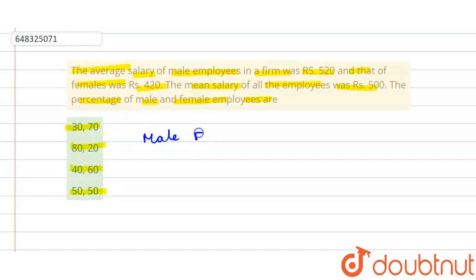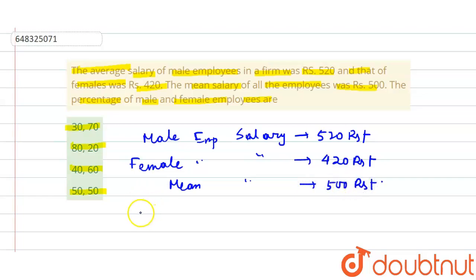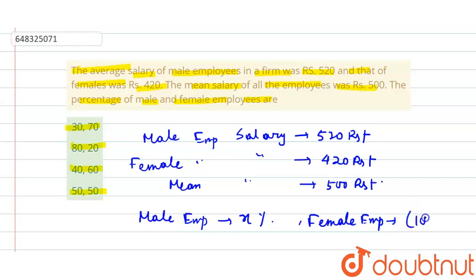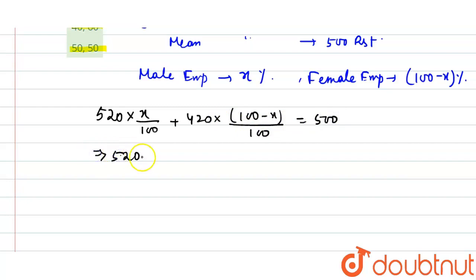Given that male employee salary equals 520 rupees, female employee salary equals 420 rupees, and mean salary equals 500 rupees. Let male employees equal x percent and female employees equal 100 minus x percent. So we get: 520 into x by 100, plus 420 into 100 minus x by 100, equals 500.